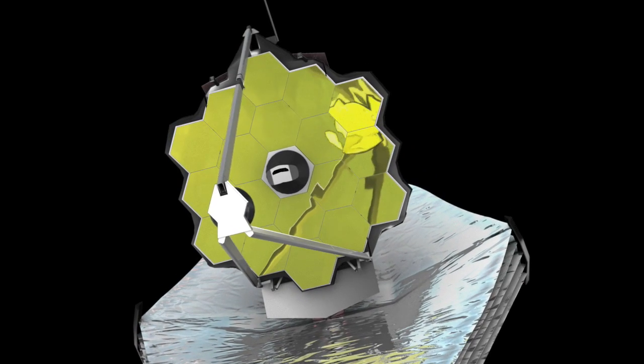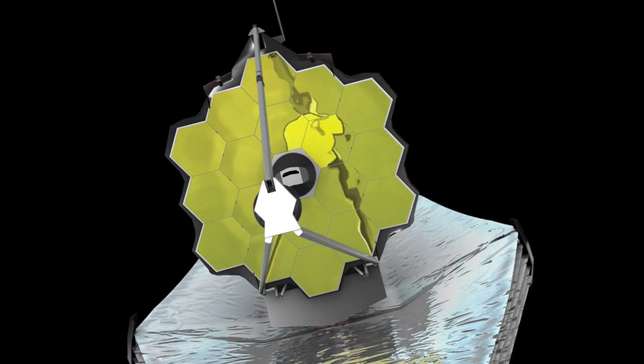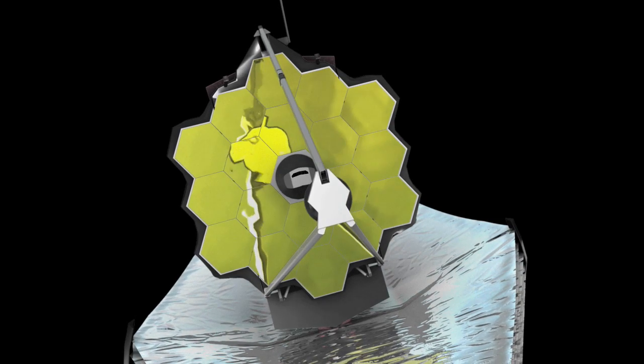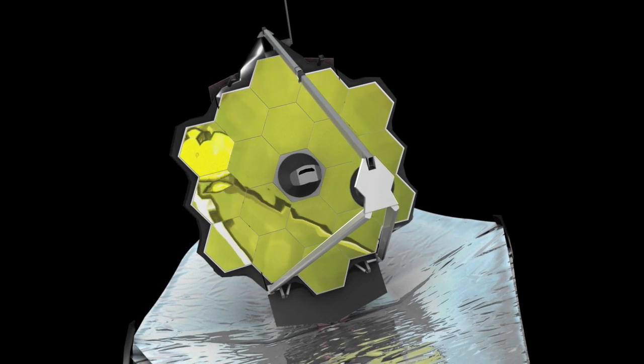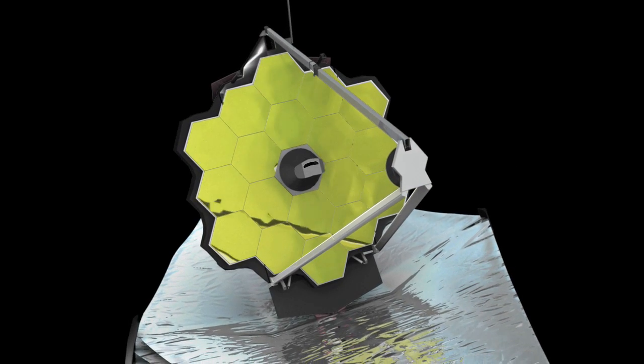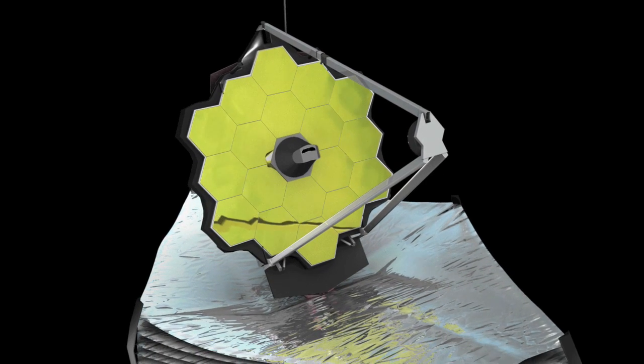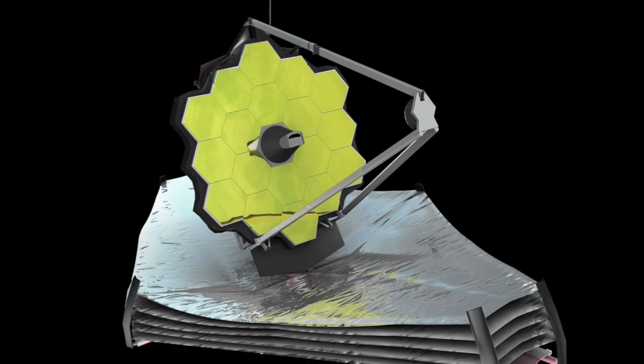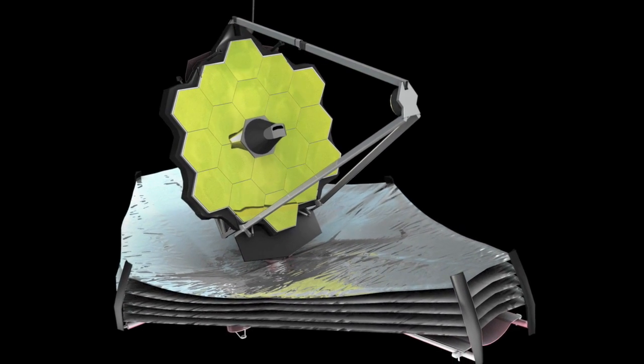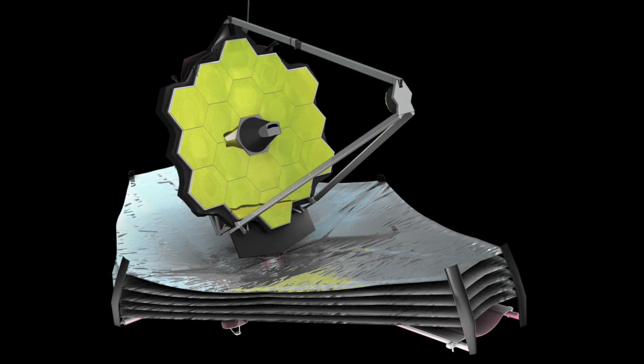The hexagonal segments of the mirror will be movable to allow for fine-tuning of the images in orbit. With this huge mirror and cold instruments, the James Webb Space Telescope will be equipped to detect highly redshifted light emitted from the earliest galaxies.